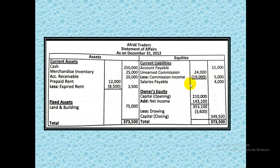Salaries payable — since in our adjusting entry we created a liability of 4,000 — that will come here. Total liabilities are done. In the owners equity section, capital at start comes in, which is why we calculated it. Net income is directly given in the question; if it were not given we would have had to prepare a profit and loss statement. Additional investment, if any, would also be added — none is given here. Drawings of 3,600 are subtracted, giving us the closing or ending capital, which is added to total liabilities to complete the statement of affairs.